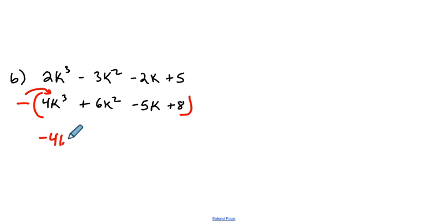That becomes a negative 4K to the power of 3. Basically, all of the signs change in here. This is going to turn into a negative 6K squared. This will turn into a positive 5K. And this will turn into a negative 8. Okay, so we're going to combine this with this right here.